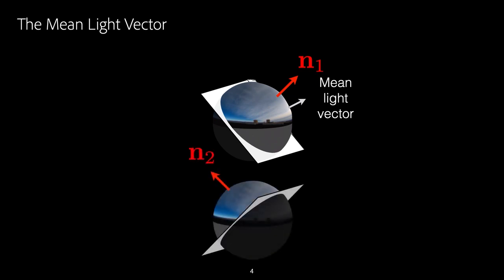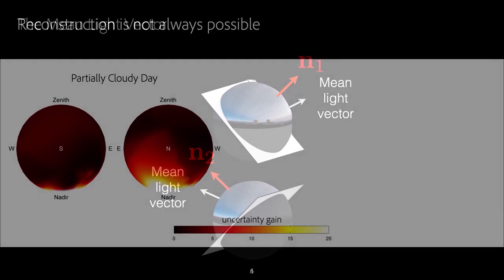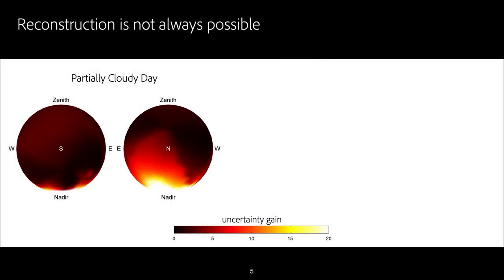We have to redo this analysis for every different normal present in the scene. One of our contributions is a framework to analyze and predict the photometric stereo reconstruction quality when using photometric cues. Here is a sphere representing all possible surface normals in a scene, where black represents a good expected surface normal reconstruction, and yellow or white regions represent where the reconstruction uncertainty is high when applying classical photometric stereo methods.